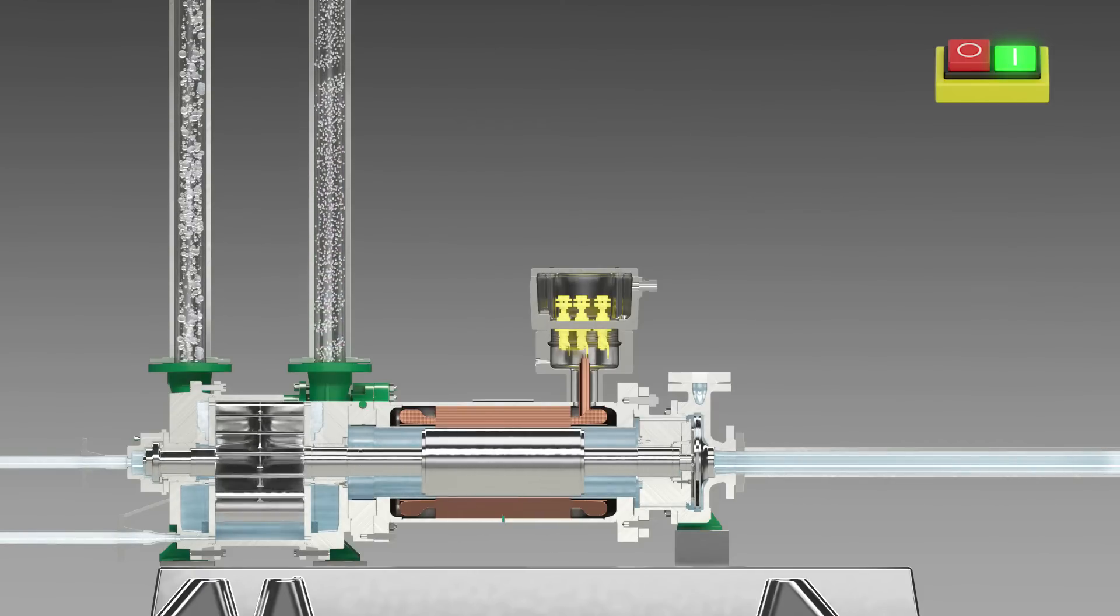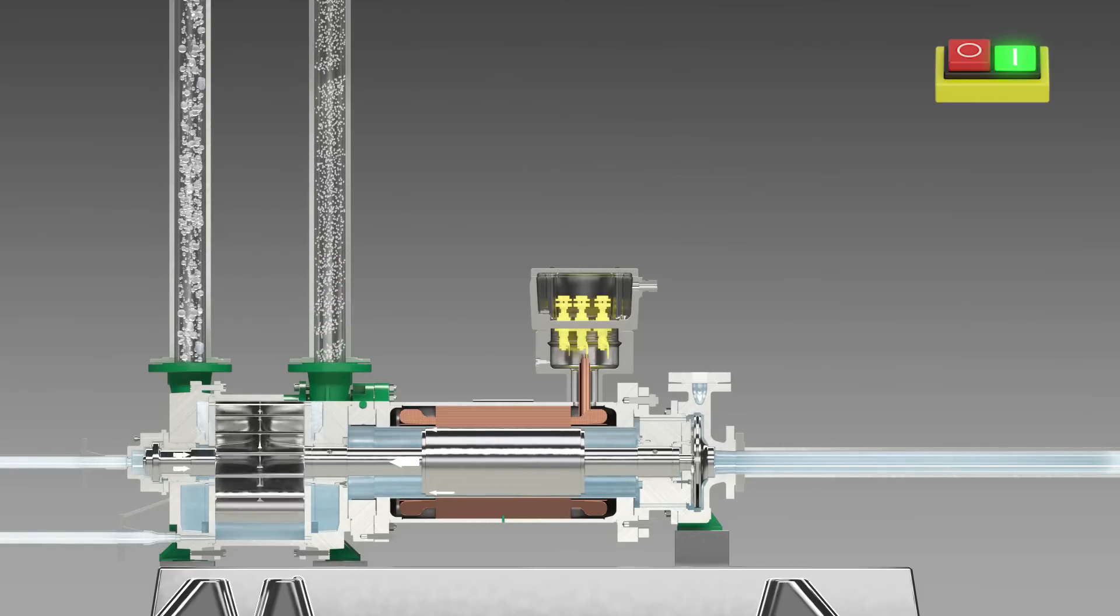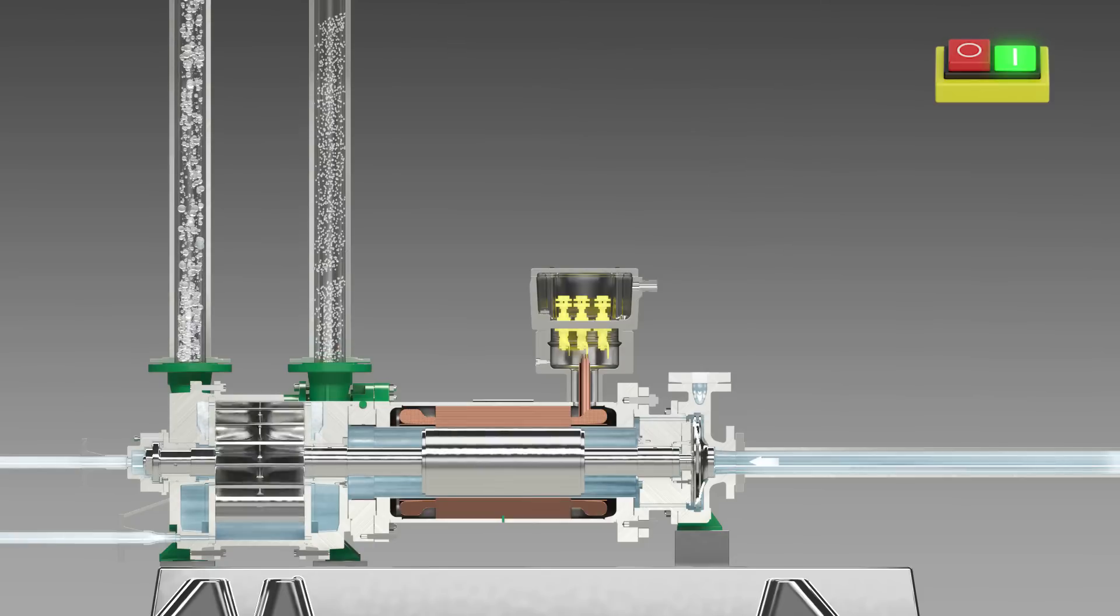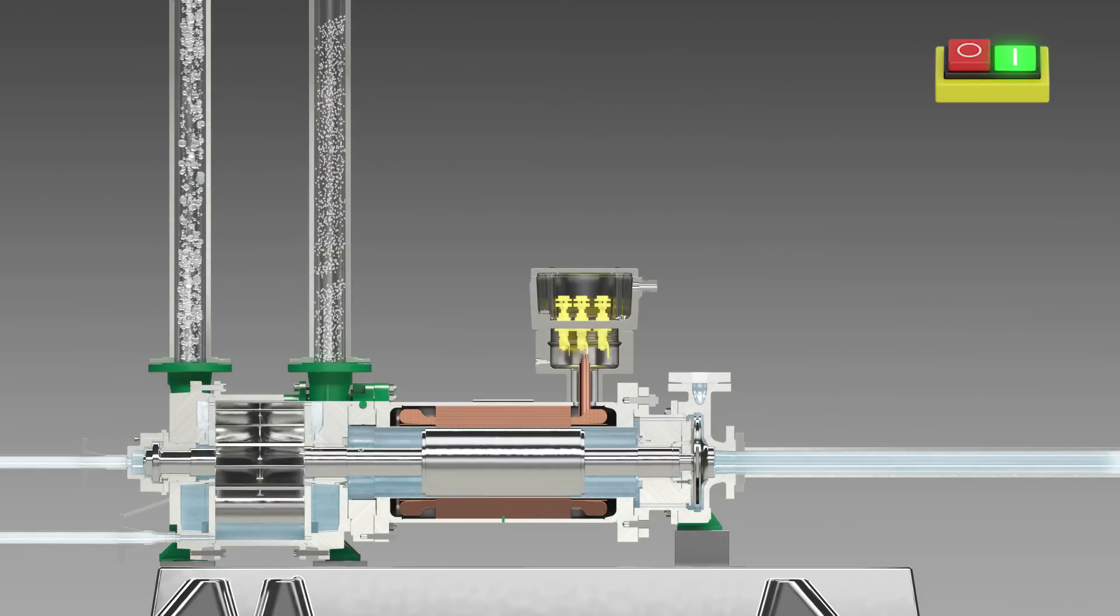The liquid ring vacuum pump with a canned motor operates wear and maintenance free in continuous operation thanks to hydrodynamic plane bearings. The liquid-filled, low noise, low vibration canned motor provides double protection against leakage.